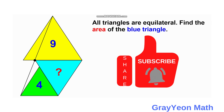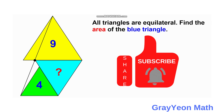Welcome to GrayonMath. We are asked to solve this problem. We have 3 equilateral triangles arranged as shown. The area of the yellow triangle is 9 square units, while the area of the green triangle is 4 square units, and we are required to find the area of the blue triangle.